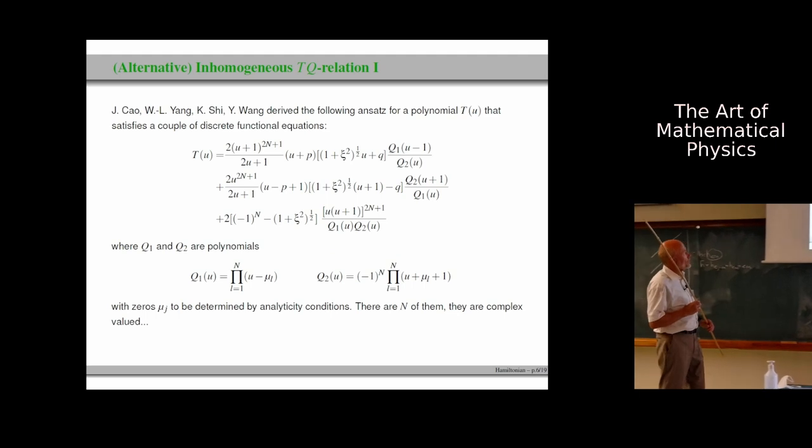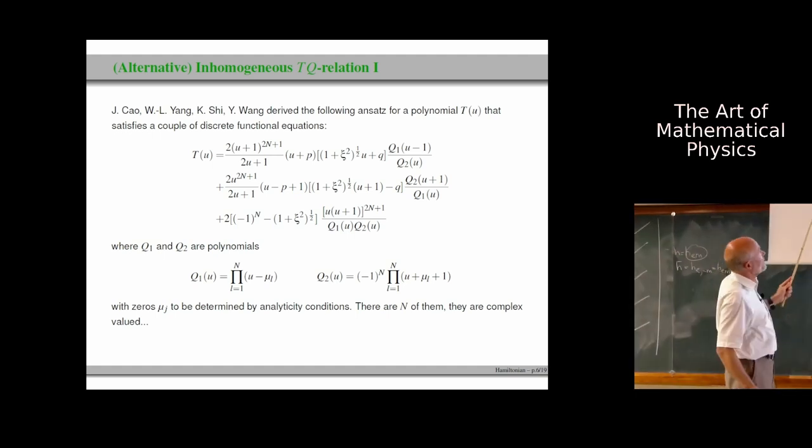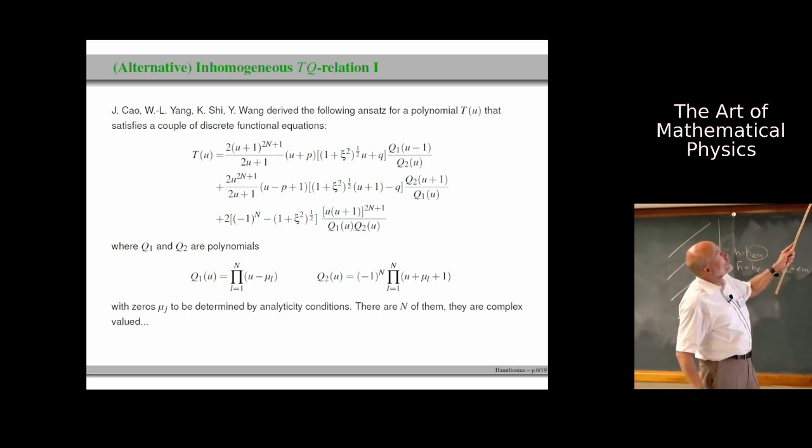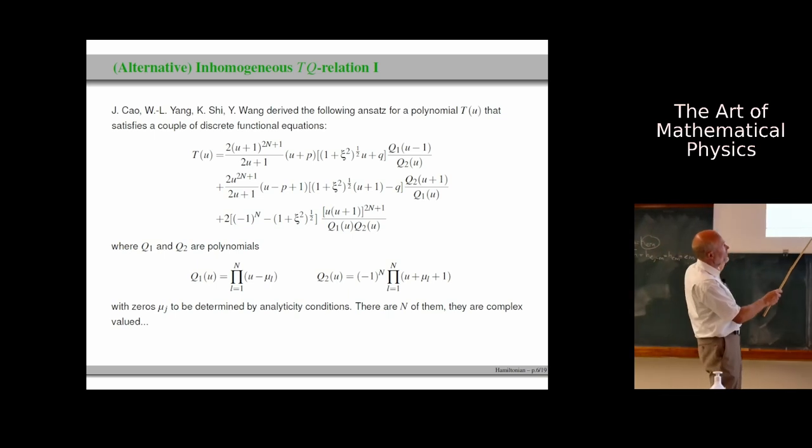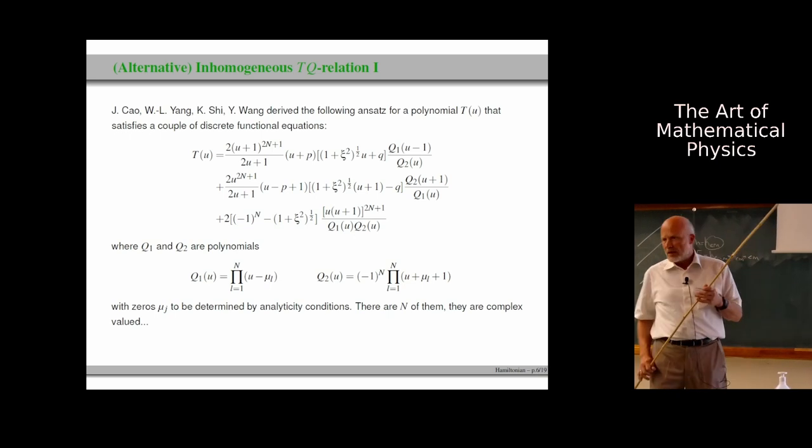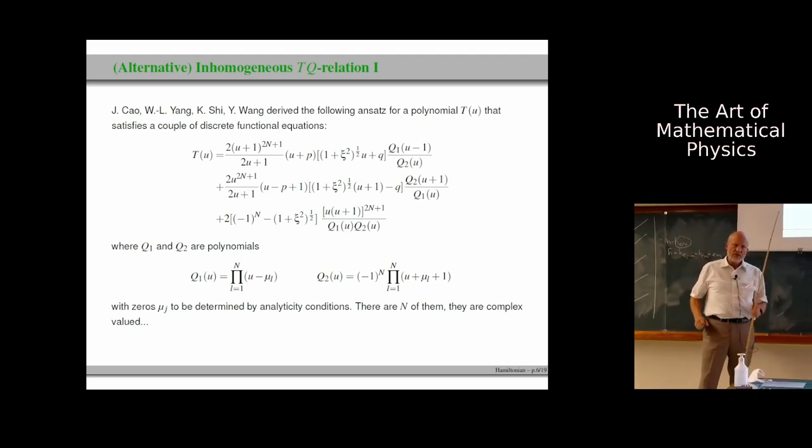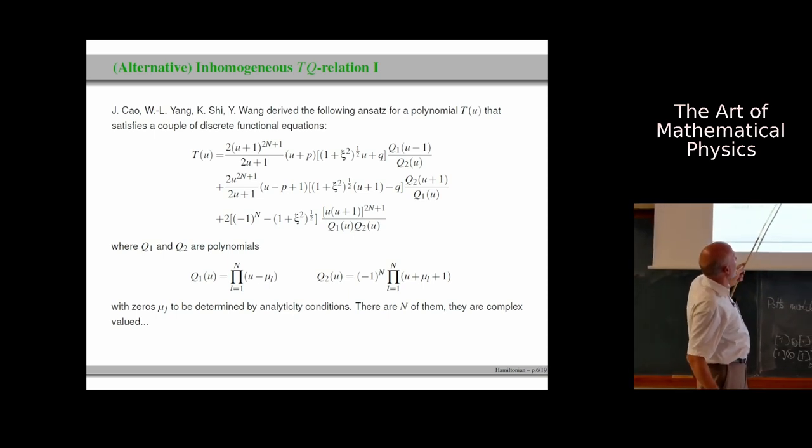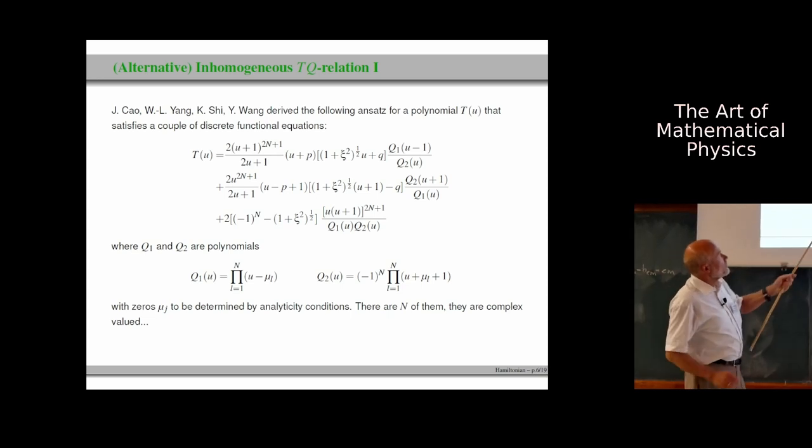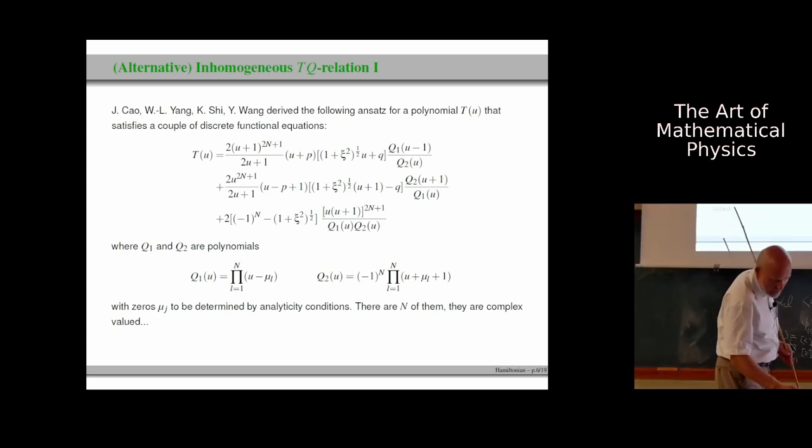What do we want to do? Or what do I want to show to you? I want to show to you how to turn this so-called inhomogeneous TQ relation by Cao et al into something useful. In fact, I have two TQ-like relations. And they call this one I'm using the alternative one. Anyway, when you look at it, you do not understand much. So it looks like a TQ relation. On the left-hand side, there's T. On the right-hand side, explicit functions times ratios of Q, like in Baxter's TQ relation. The fields p and q appear somewhere. Little q, I should say, little p, little q. So u is a spectral parameter. Xi appears. But there's also a term where some explicit function is not multiplied to a ratio of Qs, but it's divided by the product of the two Qs. So how can you possibly use something like that?